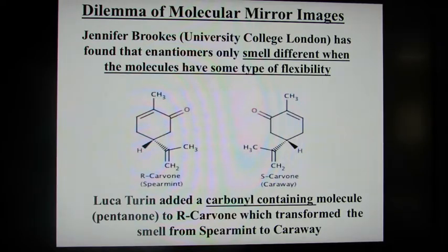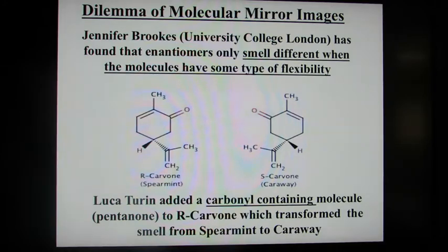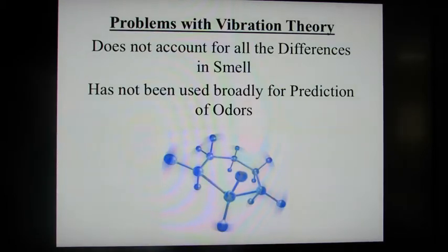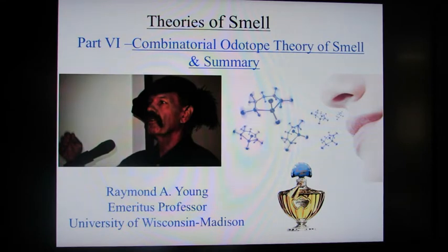Luca Turin suggested that adding a carbonyl compound would change or unify the smell of enantiomers. He did this by adding pentanone, and the R-carvone — which smelled of spearmint — was transformed to the smell of the S-carvone, caraway. He indicated this was evidence that molecules could be transformed and somewhat locked in place by flexibility. However, we have problems with the vibration theory: it doesn't account for all differences in smell and has not been broadly used for prediction of odors. In the next presentation, I'll talk about another theory of smell — the combinatorial ototope theory — and summarize what we know at this point.